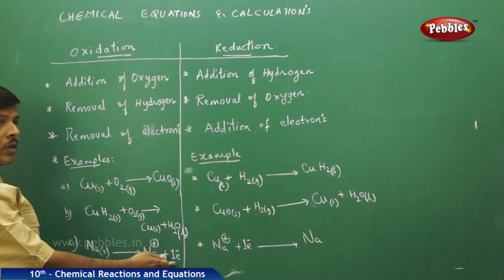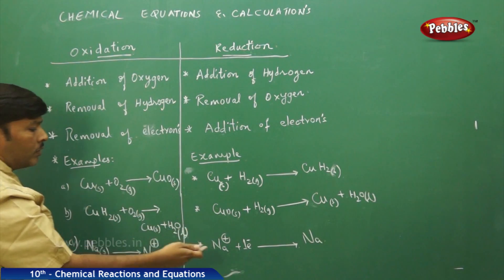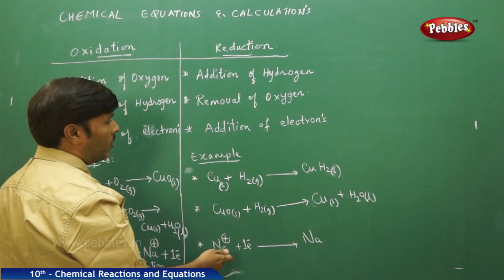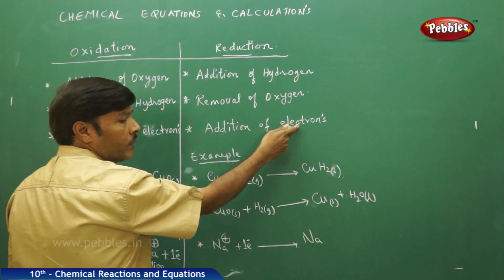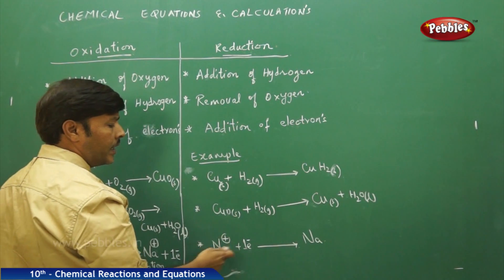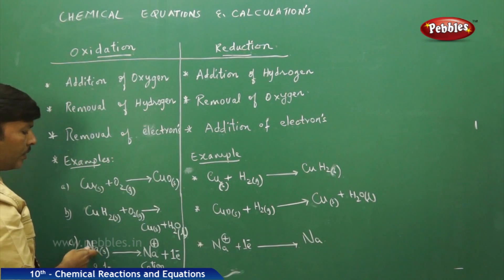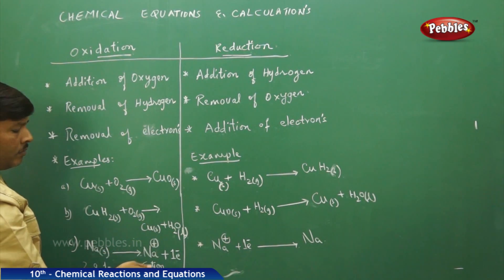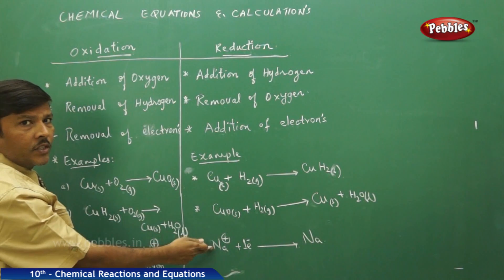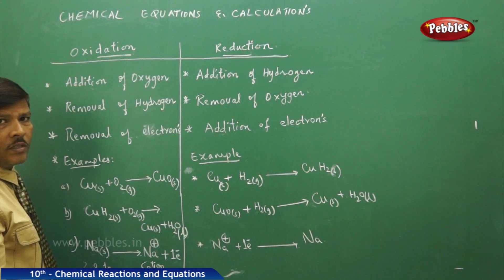In oxidation, electrons are lost — that is why we call it removal of electrons. In reduction, electrons are gained by the ion — that is why we call it addition of electrons. In reduction, an ion is converted to an element, and in oxidation, an element is converted to an ion by loss of electrons. Therefore, the conditions of oxidation as well as reduction are effectively satisfied by following these three important statements.